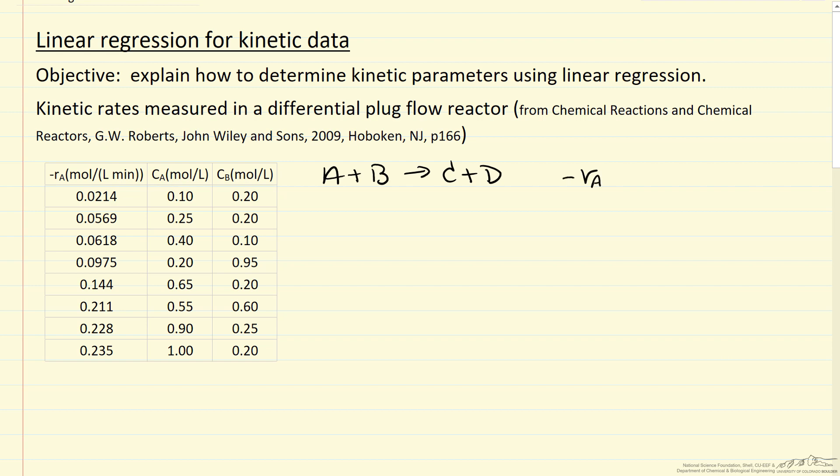So, minus R sub A, we could call that R, make it positive, rate constant, concentration of A to some power, concentration of B to some power. So what we're going to use linear regression for is to determine K, N, and M.